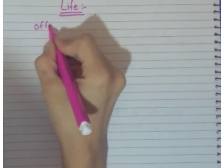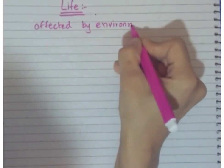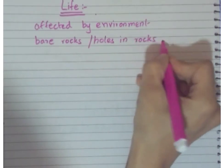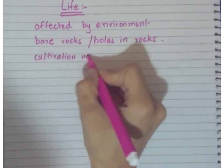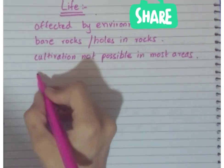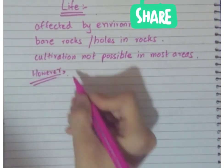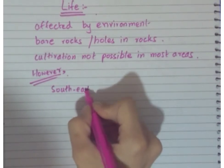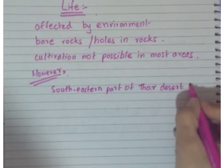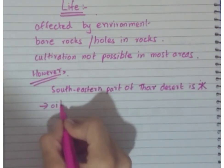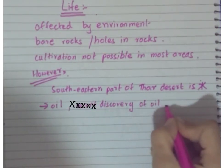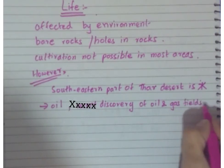Moving on to the life of people living in the desert — our lives are affected by our environment. There are bare rocks with holes in them, cutting roads through those areas is very difficult, and cultivation is not possible because of lack of rainfall. You cannot even dig a well because the water table is too low. However, some parts of the desert are important because they are rich in mineral resources — particularly the southern and southeastern part of the Thar desert, where mineral oil and gas have been discovered.